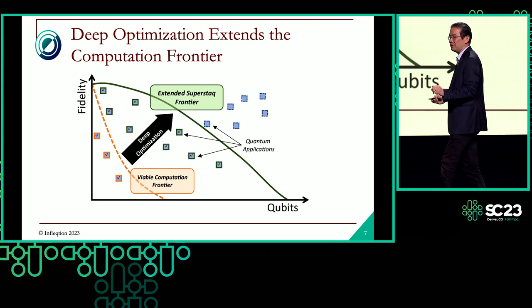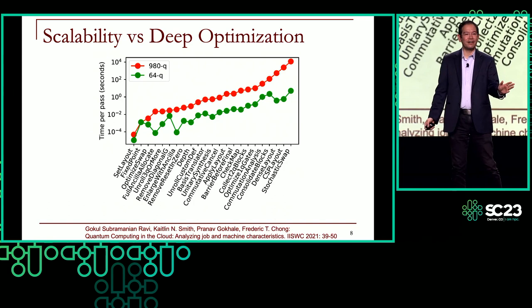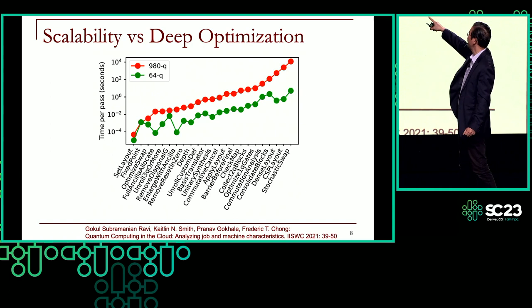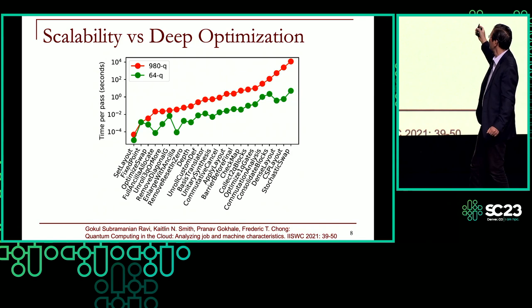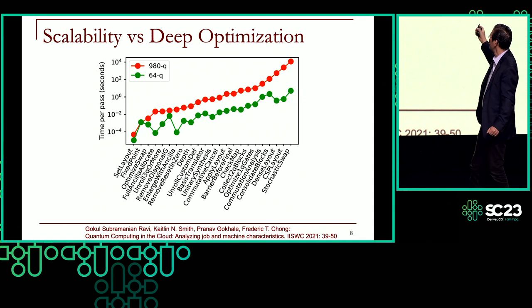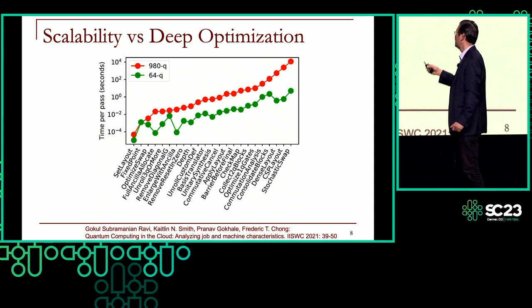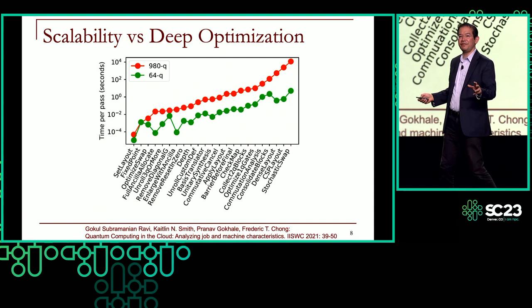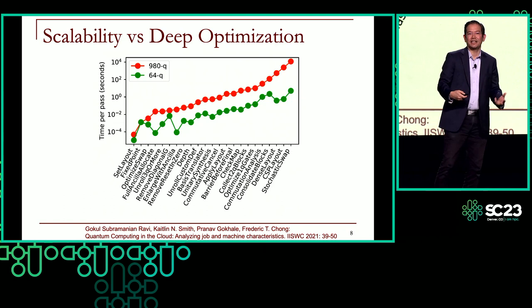If you look at the development of quantum machines on two axes, the one you'll hear about most is the number of qubits — but as an architect, that's like looking at microprocessors only in terms of their clock rate. The y-axis, fidelity, is more important. This is some data taken from IBM's compiler: compiling for a real 64-qubit machine gives the green line, and compiling for a theoretical 1,000-qubit machine gives the red line, taking on the order of hours or even days.